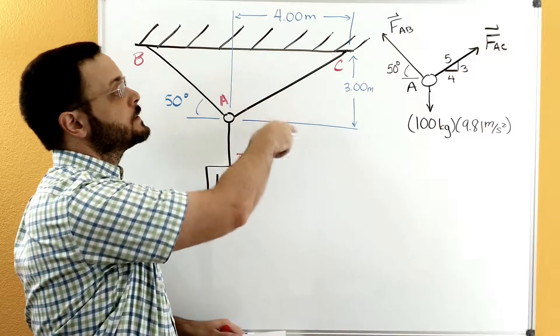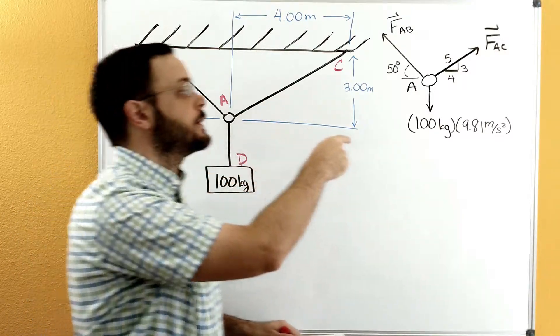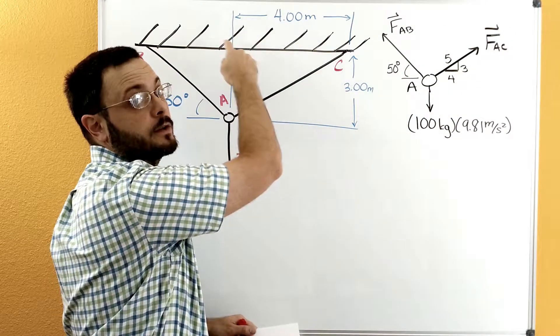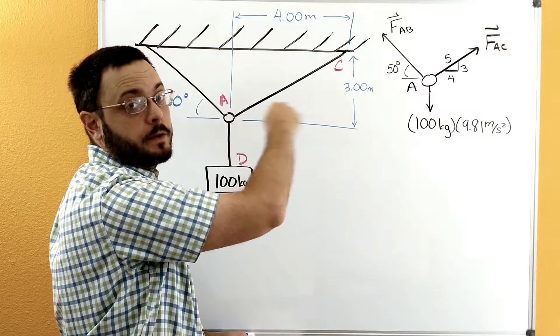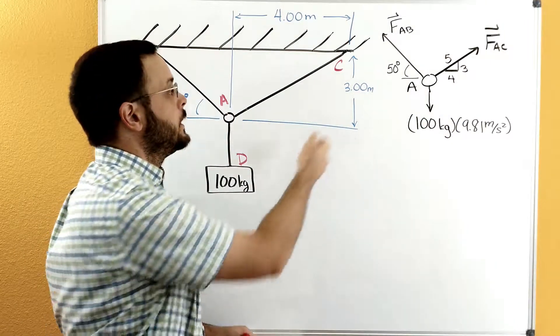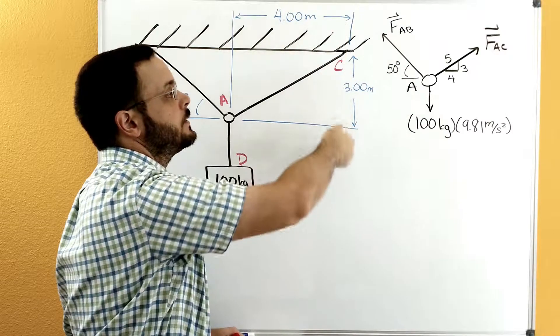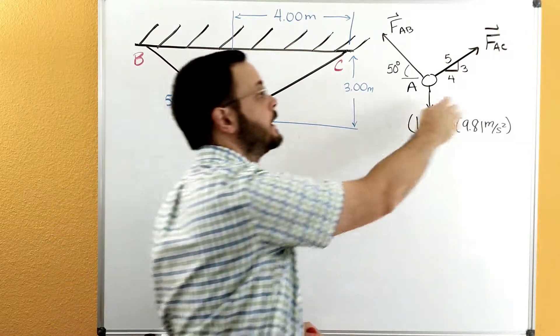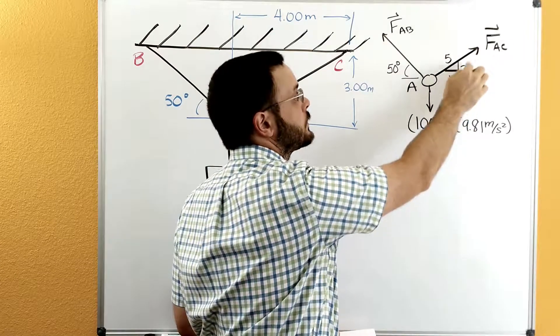Because we have the distance information over there, we can draw a similar triangle on this force. So the 4 meters here was parallel to the horizontal, parallel to the x-axis, so the 4 goes down on the bottom. The 3 meters dimension here is parallel to the vertical, it's parallel to the y-axis, and so the 3 goes on this vertical side over here.